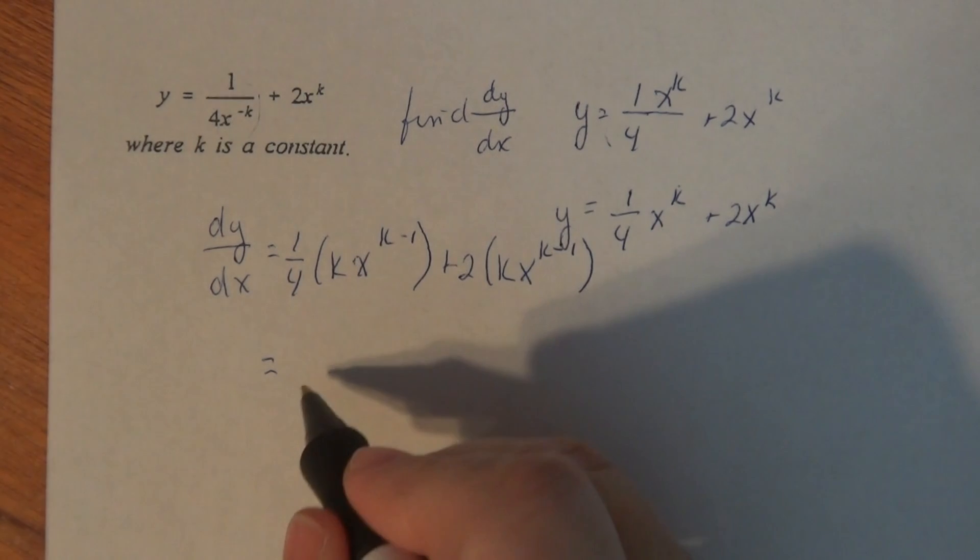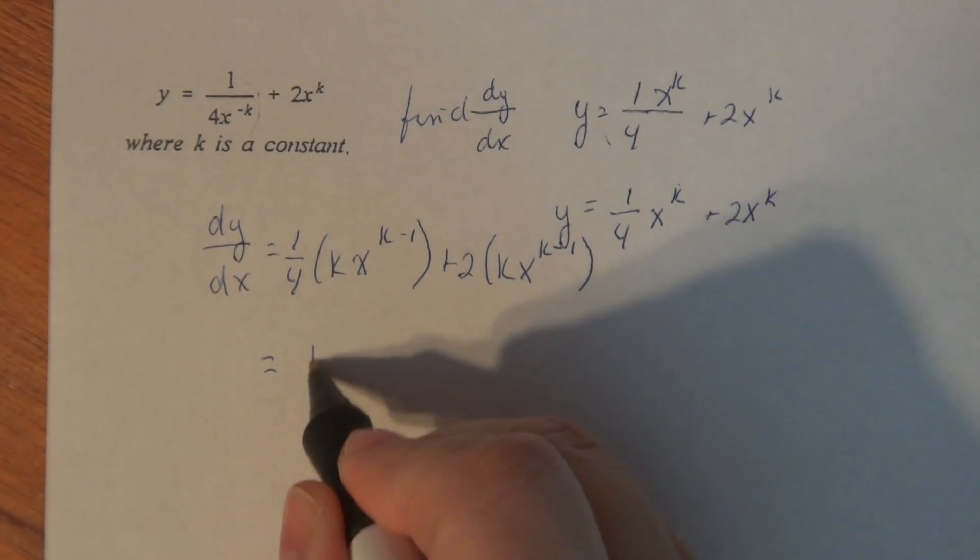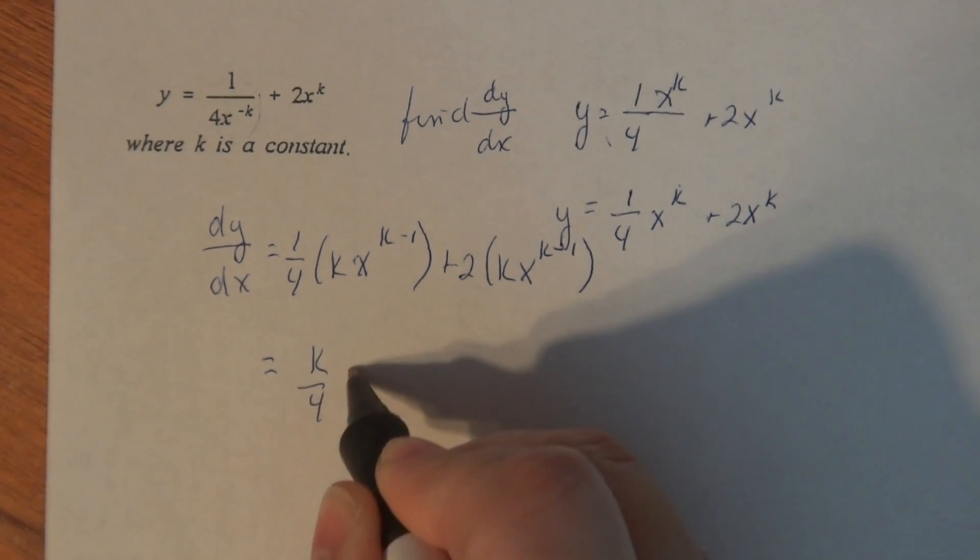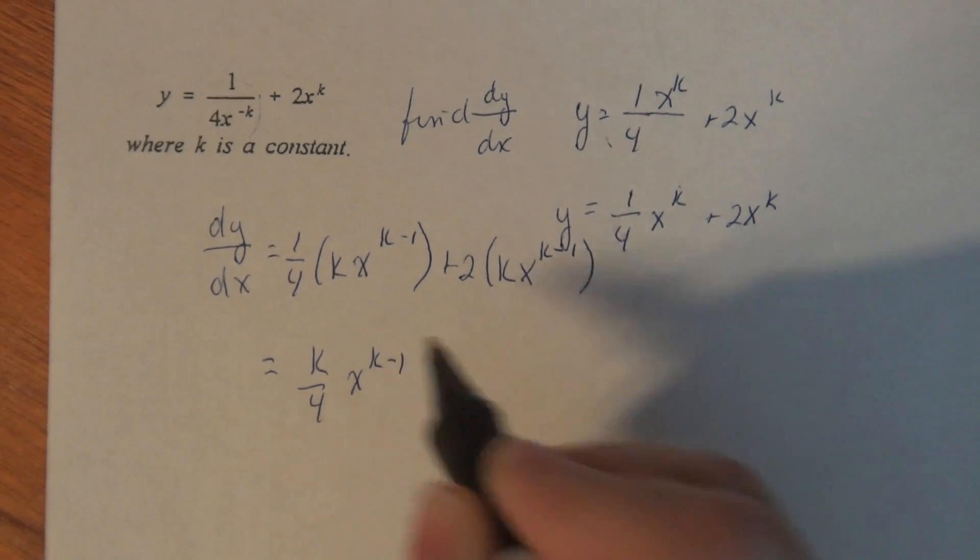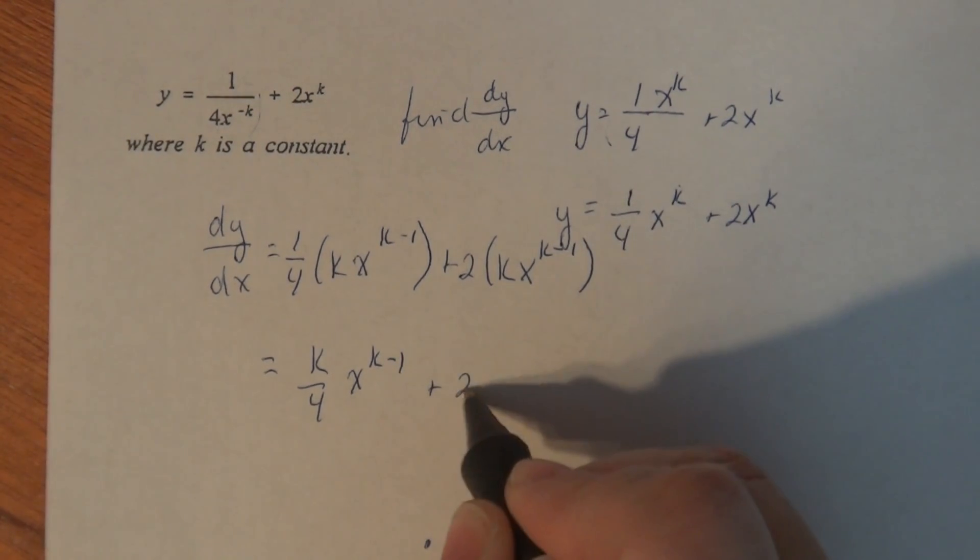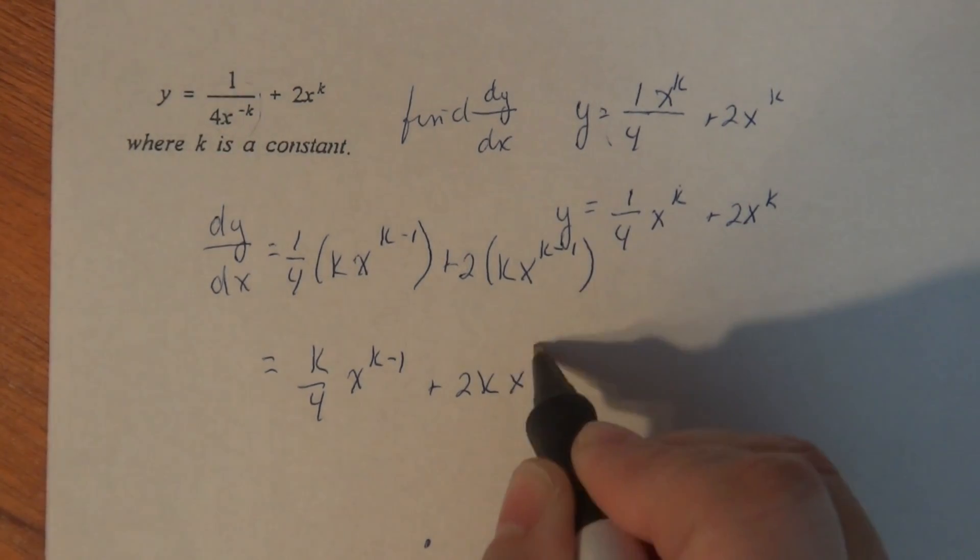Simplifying this isn't too bad either. I got k over 4, x to the k minus 1, plus 2k, x to the k minus 1.